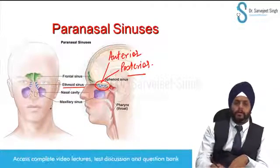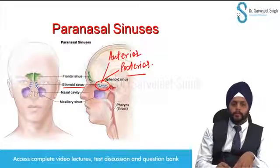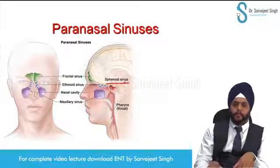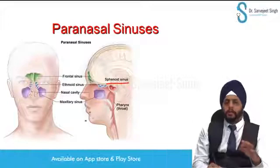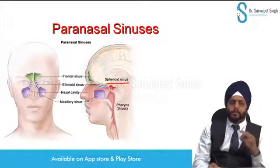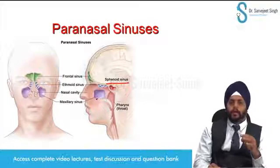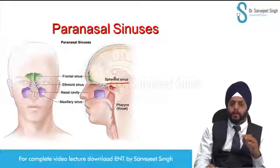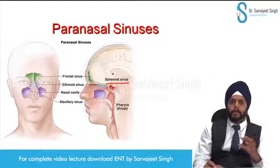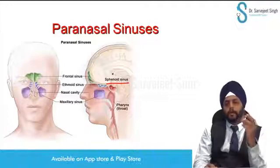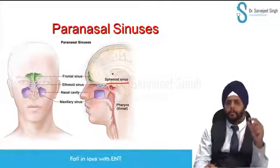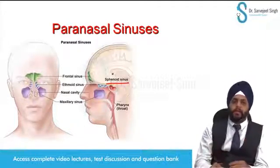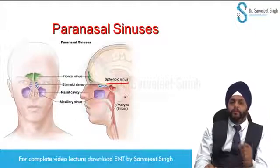The second sinus to develop is the ethmoid sinus, and then develops the sphenoid sinus. Traditionally it has been taught that the sphenoid sinus starts developing around two years of age. However, at the time of birth we still have a small sphenoid cavity. The main pneumatization of the sphenoid sinus starts around two years of age.